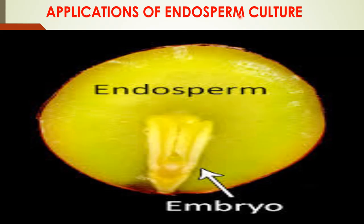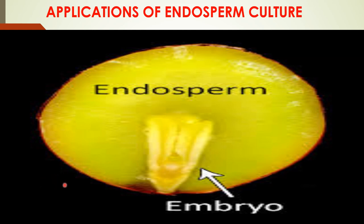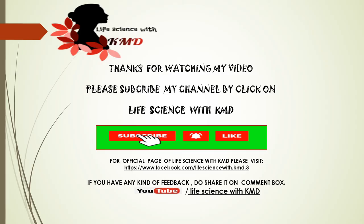Applications of endosperm culture: the technique has enabled the production of triploid plants. Triploid plants are self-sterile and usually seedless, which increases edibility of fruit and is desirable in commercially important plants such as apple, banana, grape, watermelon, and mango. In timber and fuel-yielding plants, triploids show better performance over their diploid or tetraploid relatives. There is also no problem of seed sterility as they can be multiplied by vegetative means.